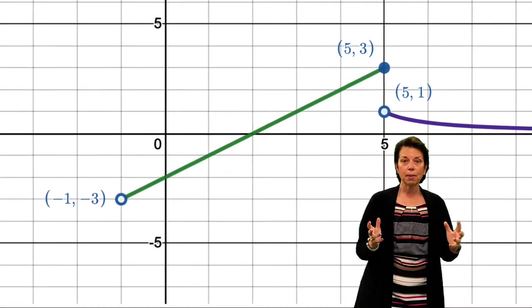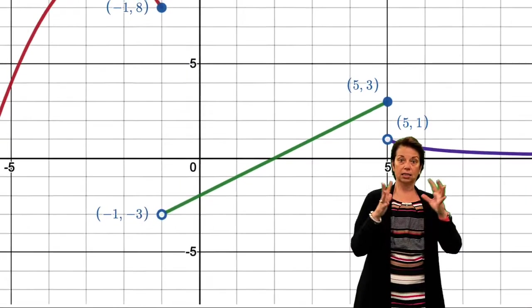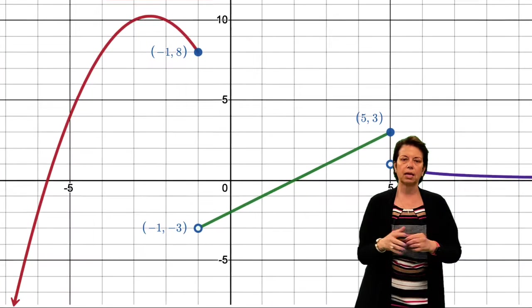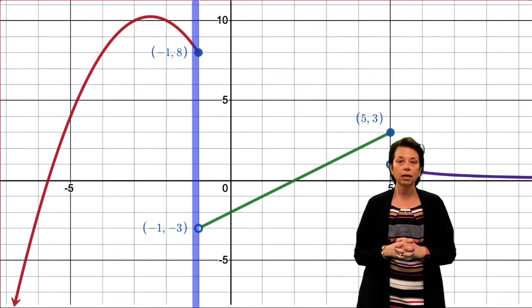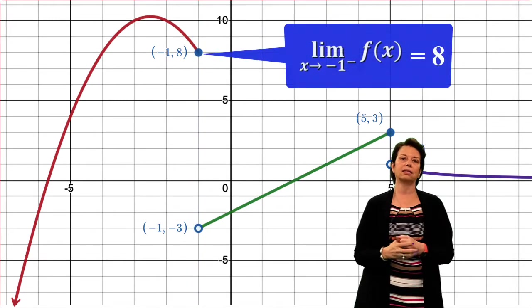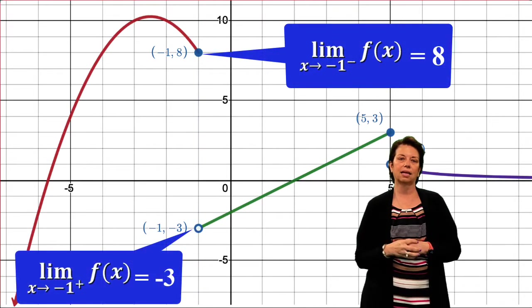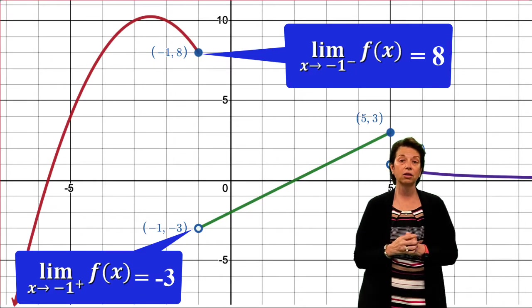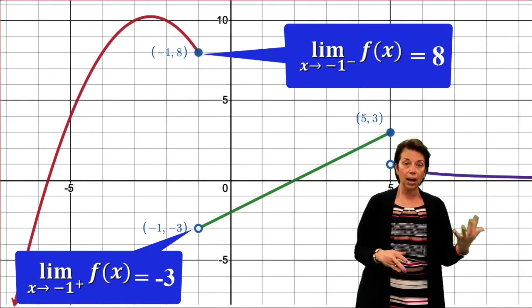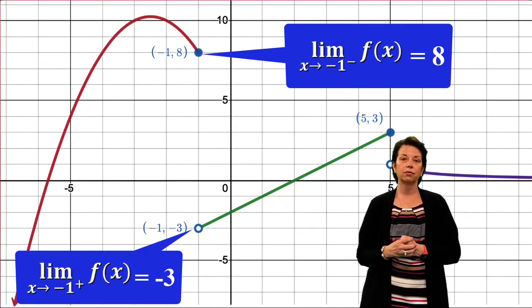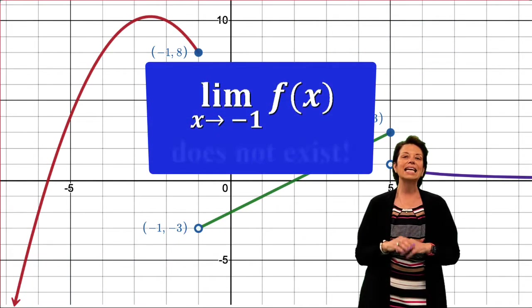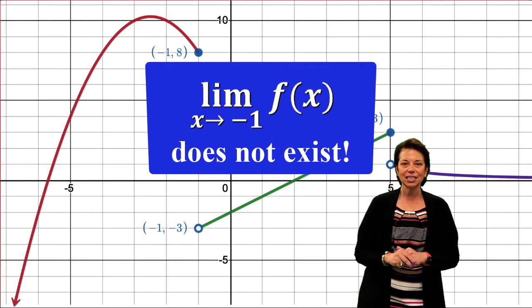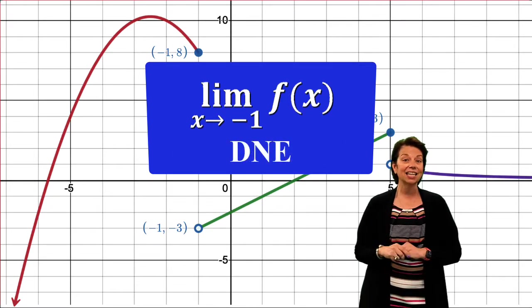So now we think about the limit, just the entire limit, the full limit as you might say, as x just generally approaches negative 1. Well in this case, since the left-hand side limit and the right-hand side limit are not the same values, one is positive 8, the other is negative 3, we would say that the limit as x approaches negative 1 does not exist. We tend to write that as DNE, does not exist.